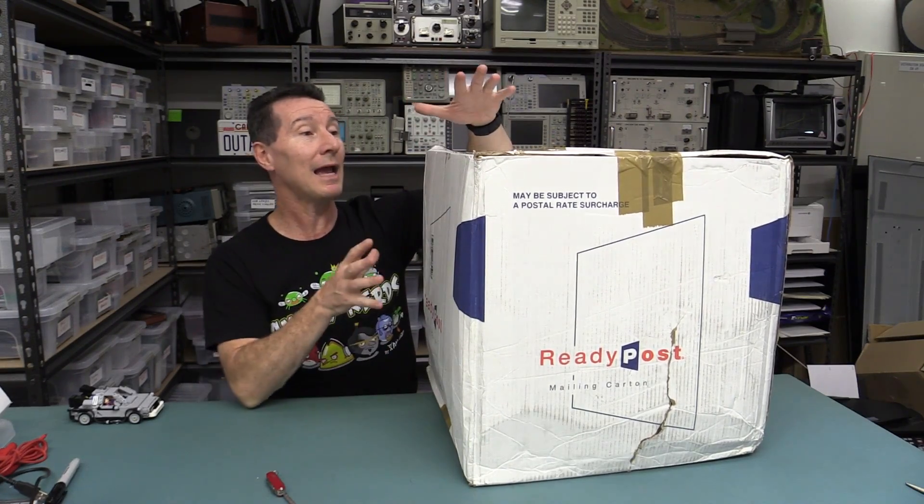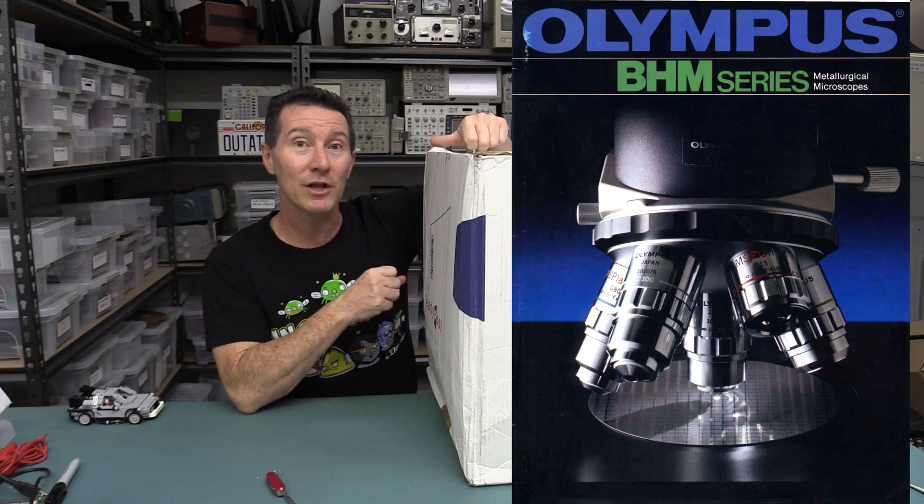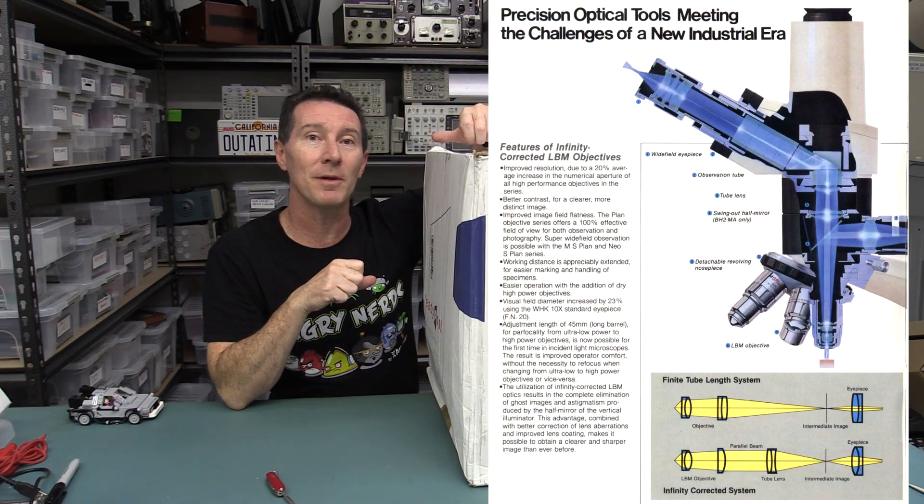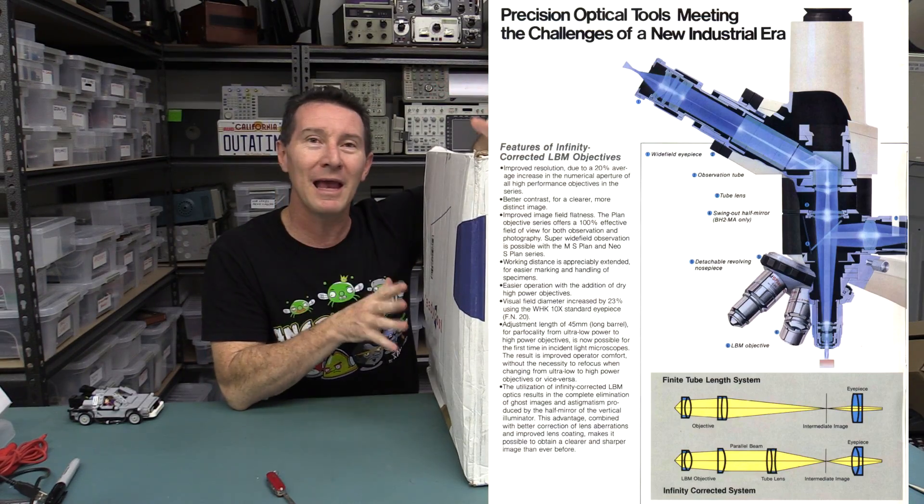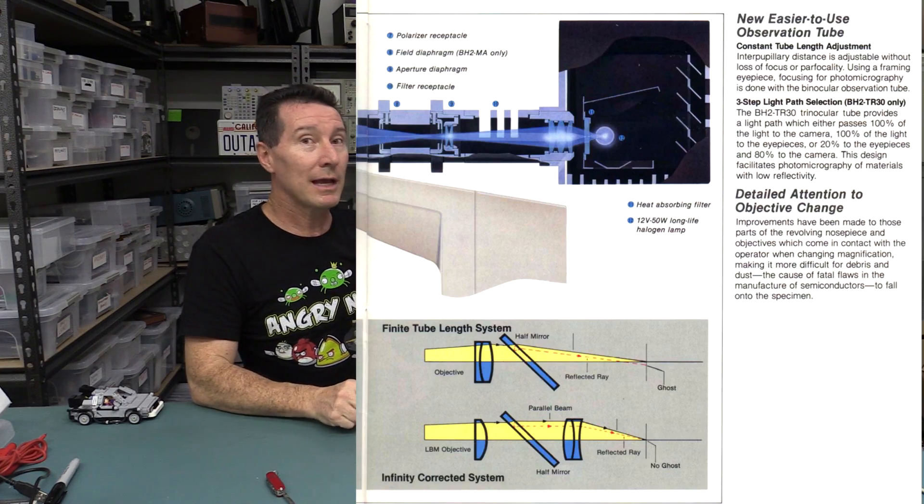So this is an Olympus BH series. This is the BHM. It's the trinocular one. So I can put a video camera on top. It's a regular stereoscopic one. It's got planar optics and all sorts of stuff. So hopefully, it's okay.